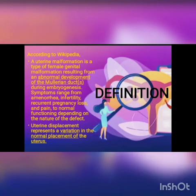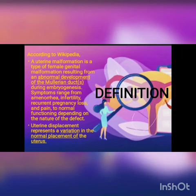According to Wikipedia, a uterine malformation is a type of female genital malformation resulting from an abnormal development of the Mullerian duct during embryogenesis. Symptoms include amenorrhea, infertility, recurrent pregnancy loss, and pain, and the normal functioning of the pelvic organs will be affected. Uterine displacement is the variation in the normal placement of the uterus — from the anteverted position it turns into a retroverted position or can invert because of some etiologies.